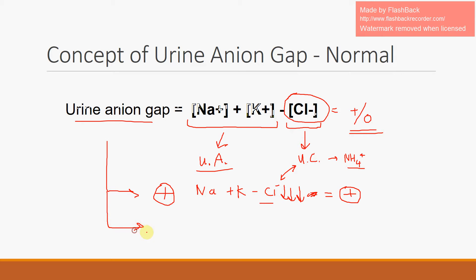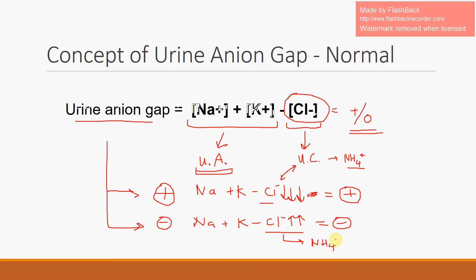Now let's discuss a case where the urine anion gap is very negative. Na plus K don't change much. But if the chloride is very increased, you'll have a very negative urine anion gap. An increased chloride magnitude suggests the presence of acid being excreted massively in the urine — meaning the body is trying to compensate for some kind of metabolic disorder by excreting acid massively.